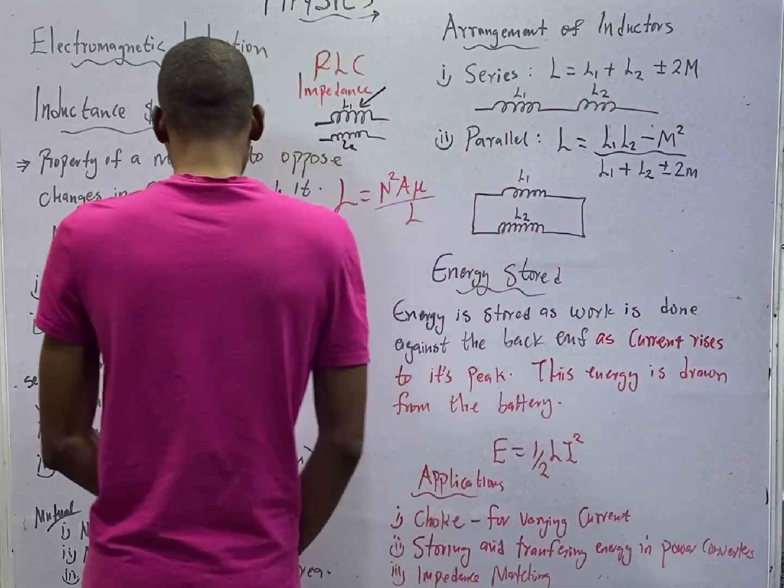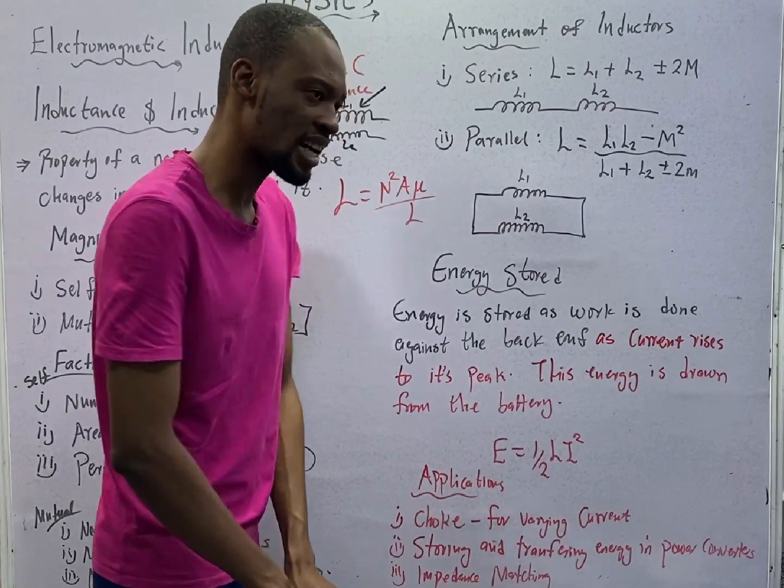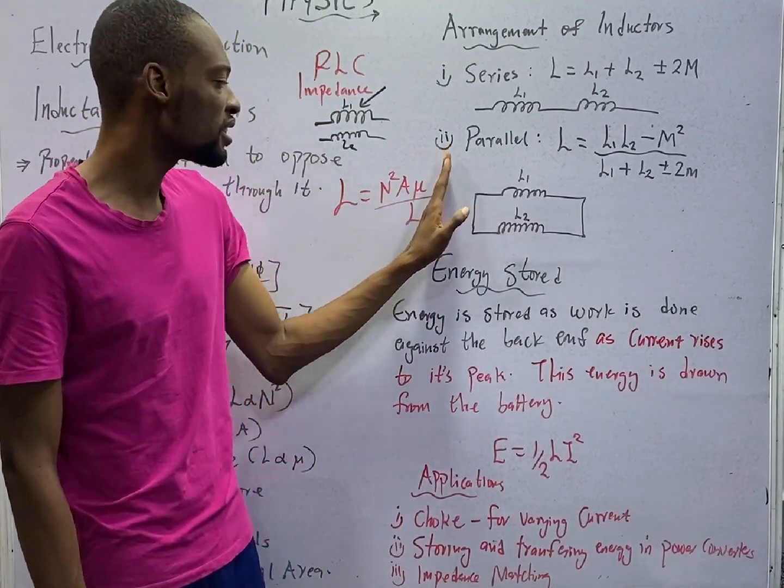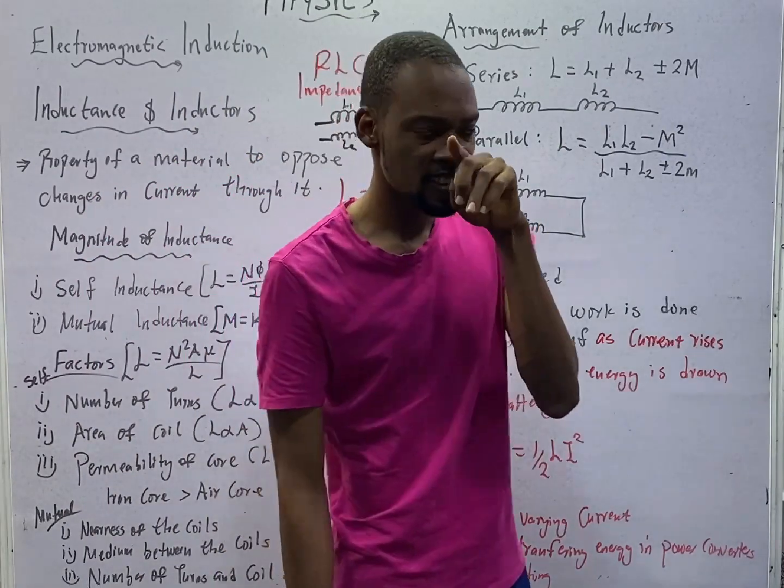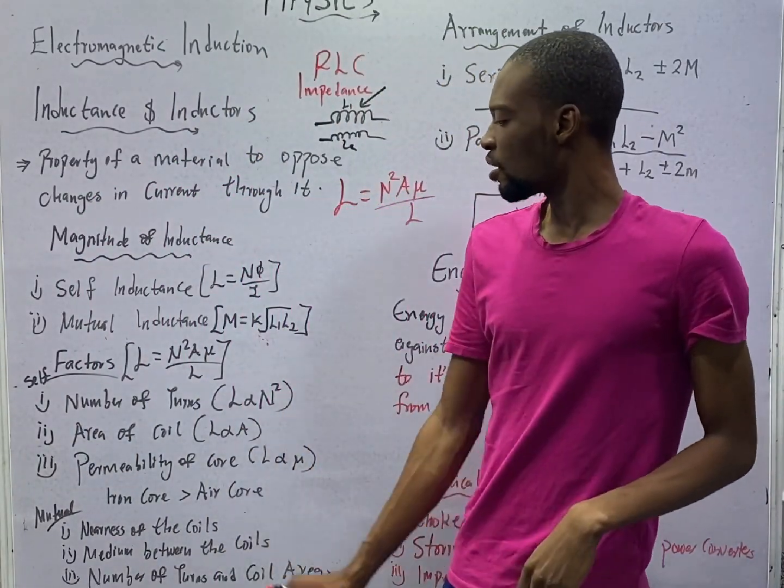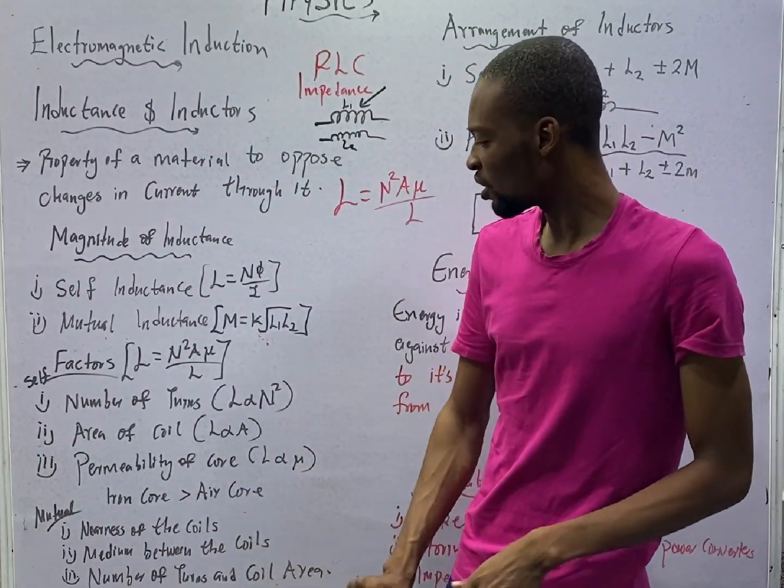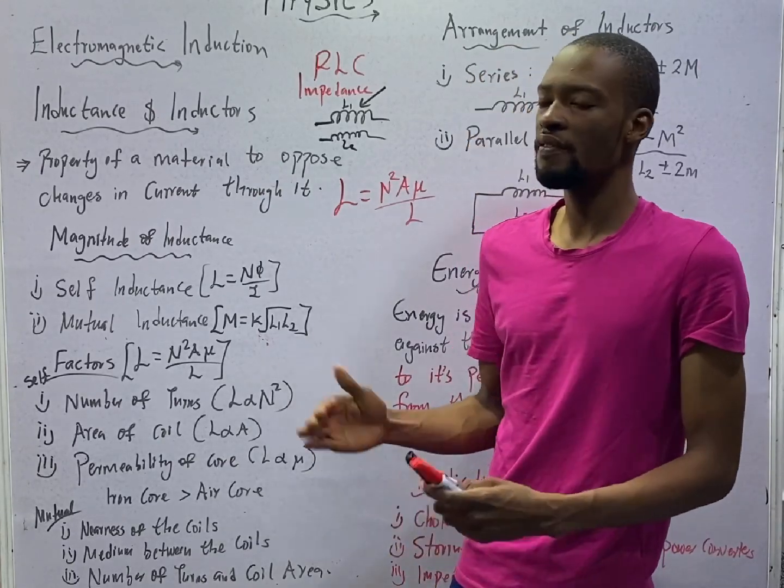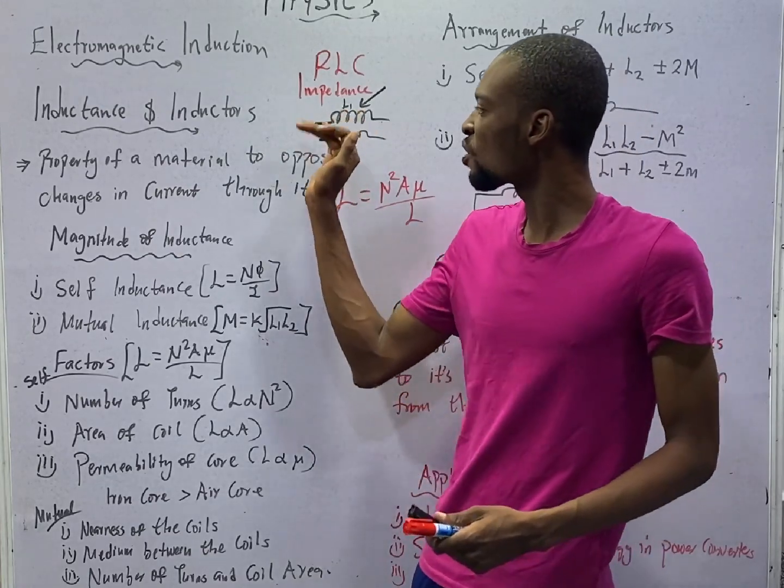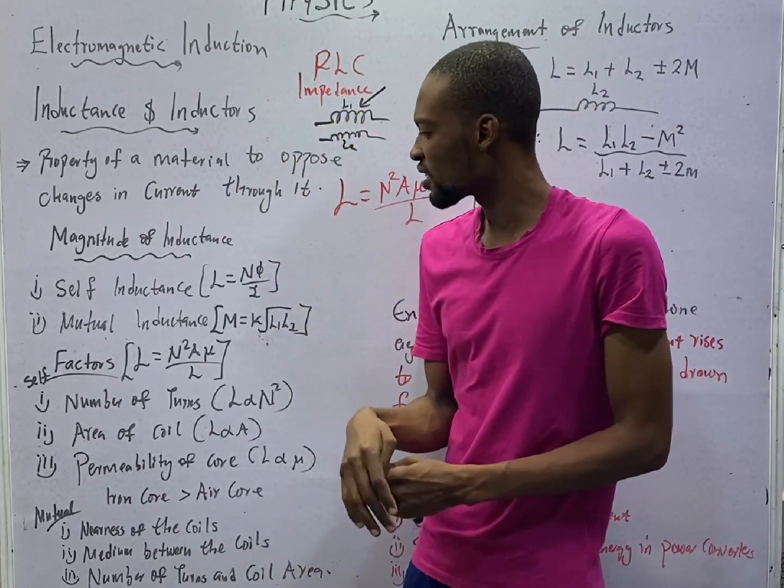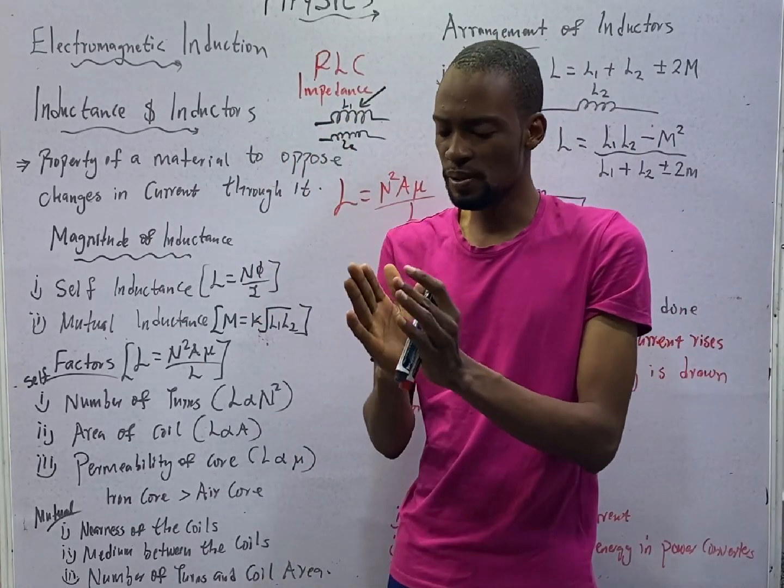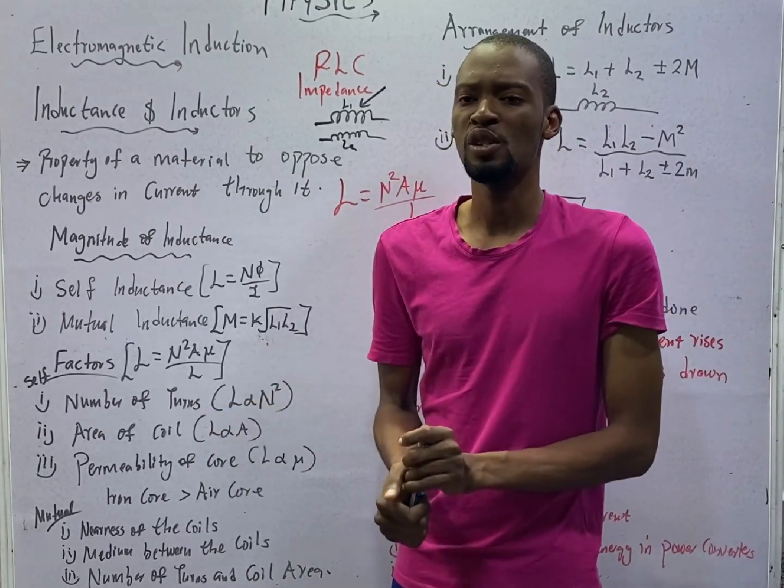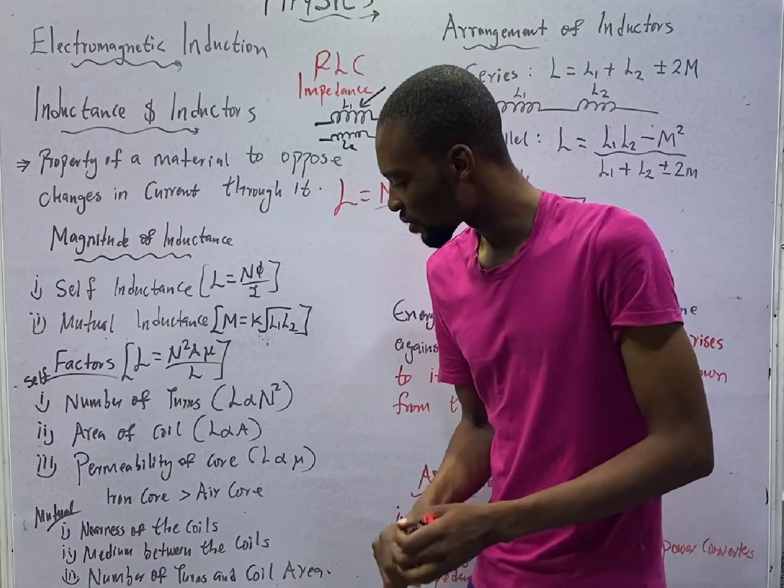The number of turns affect self-inductance. So, in summary, the factors affecting self-inductance are number of turns, area of the coils, and permeability. And they all increase self-inductance. When it comes to mutual inductance, the factors affecting mutual inductance are nearness of the coil. You know, we have two coils for there to be mutual inductance. If the coils are closely placed, mutual inductance will increase. If they are far, there will be less mutual inductance.